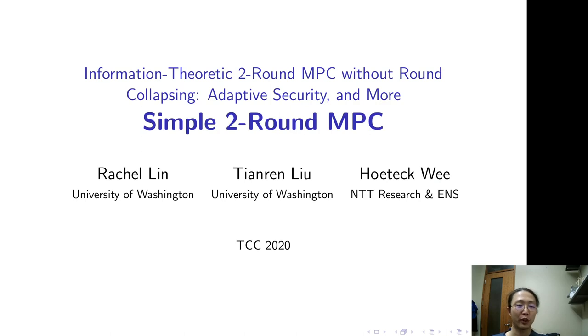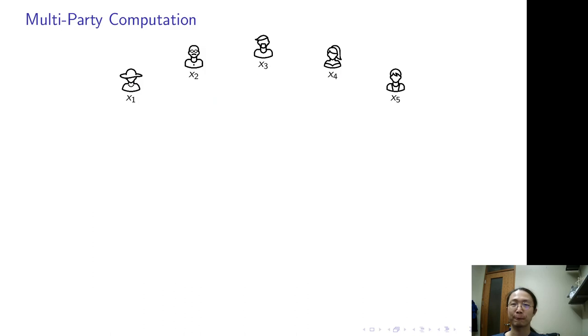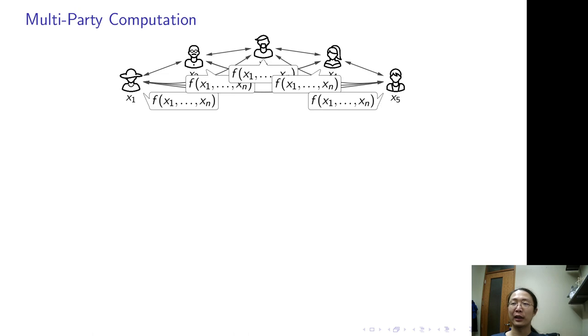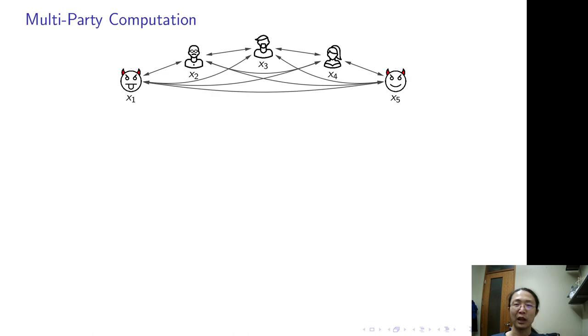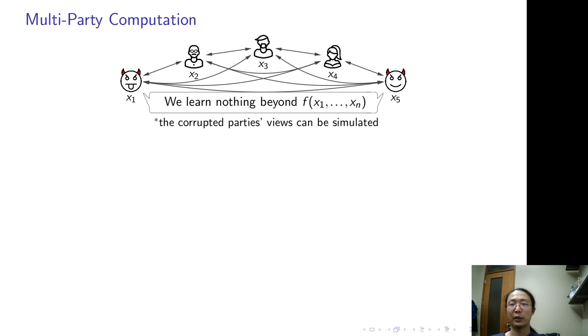This is a joint work with Richo Lin and Hotec V. We all know MPC - parties have private inputs, they talk and jointly compute a function. If some parties are corrupted by an adversary, they should learn nothing beyond function output, and their joint view can be simulated.